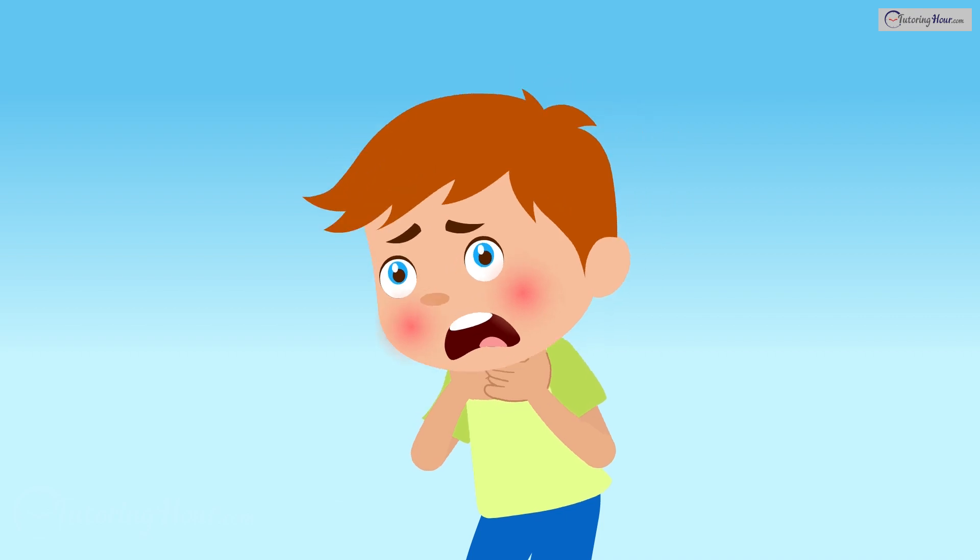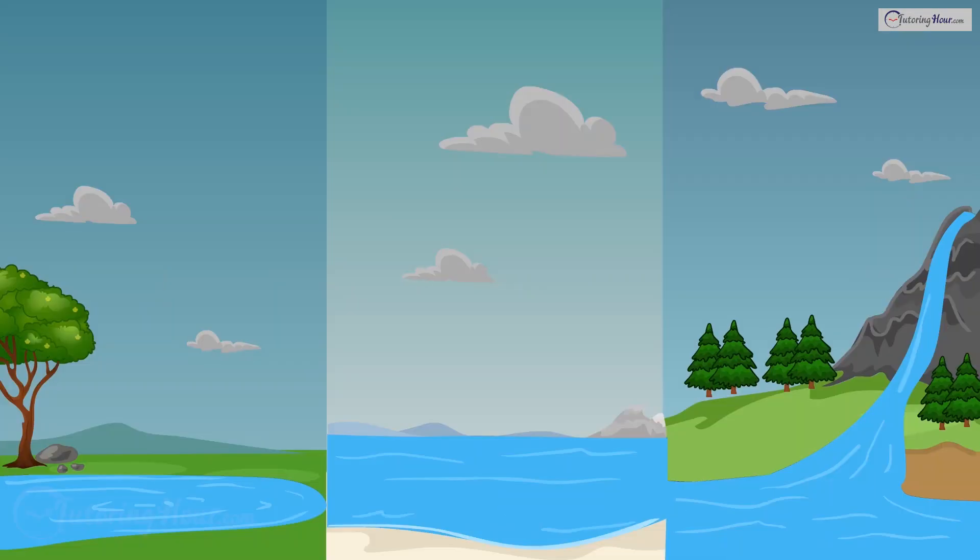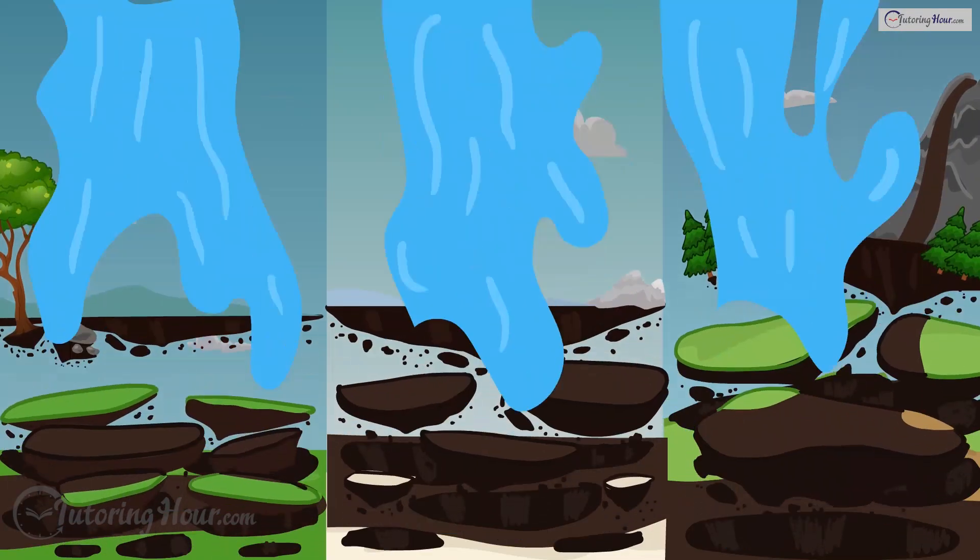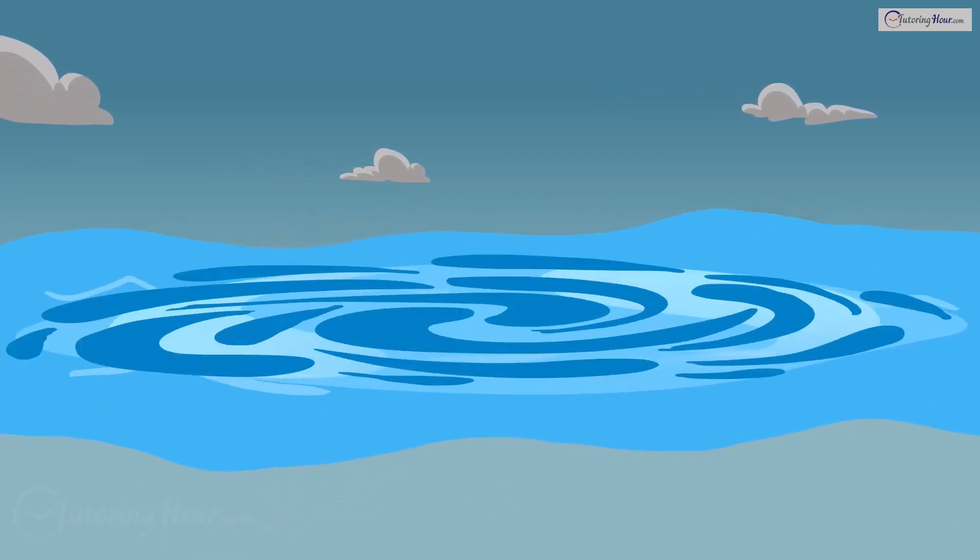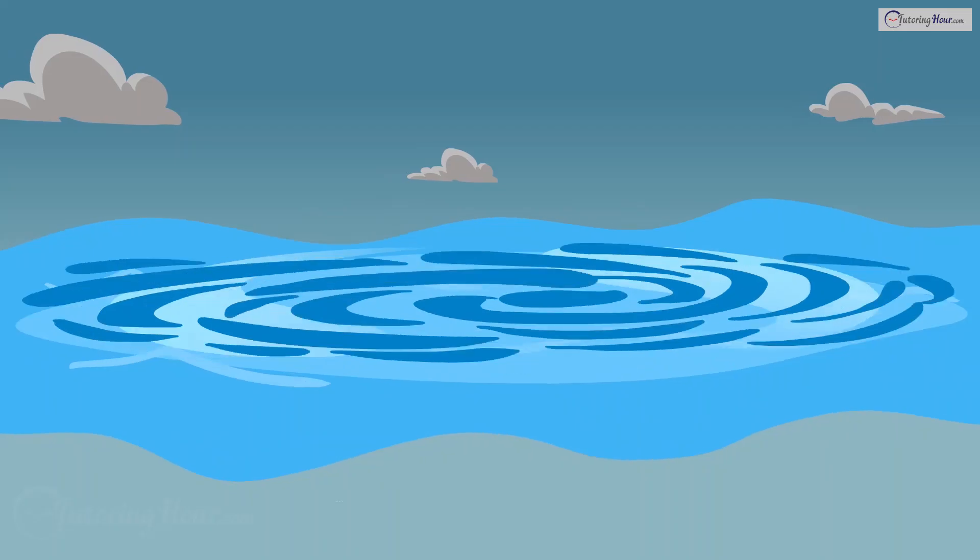The oceans, rivers, and lakes would start to rise, creating a mid-air pool. Water would float and swirl in the air, forming massive, chaotic torrents.